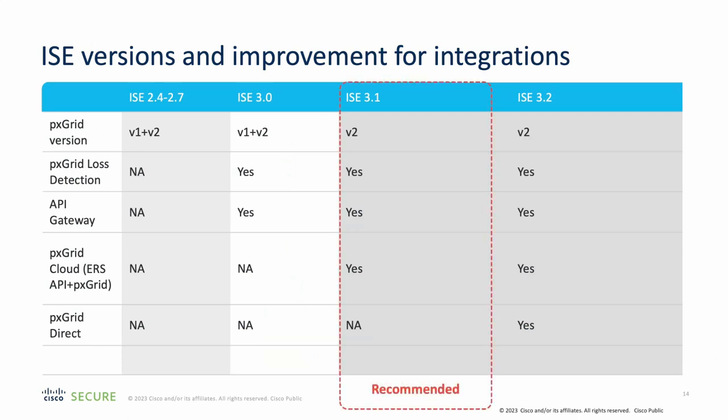This shows the version support for PXGrid API versions. We recommend that everyone migrate to version 2 of the API, which is the only version supported starting with ISE 3.1.